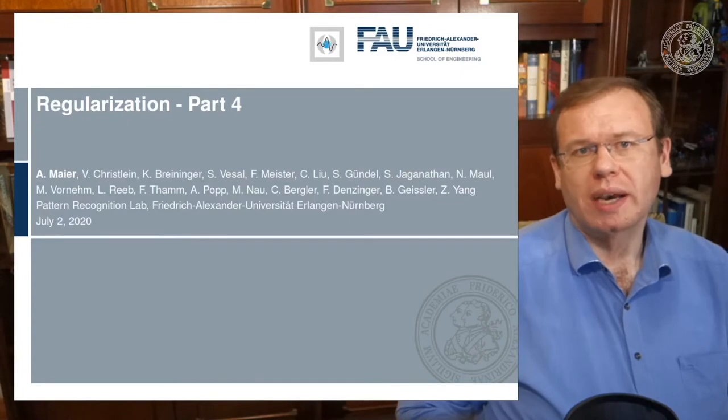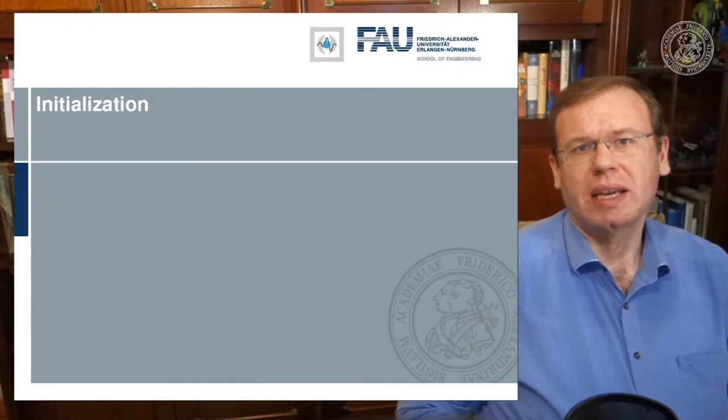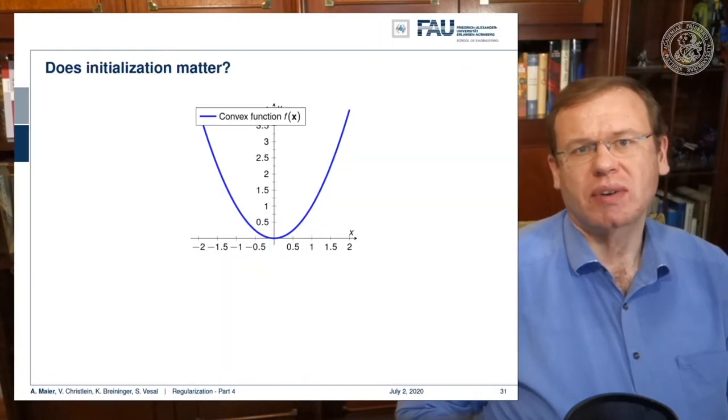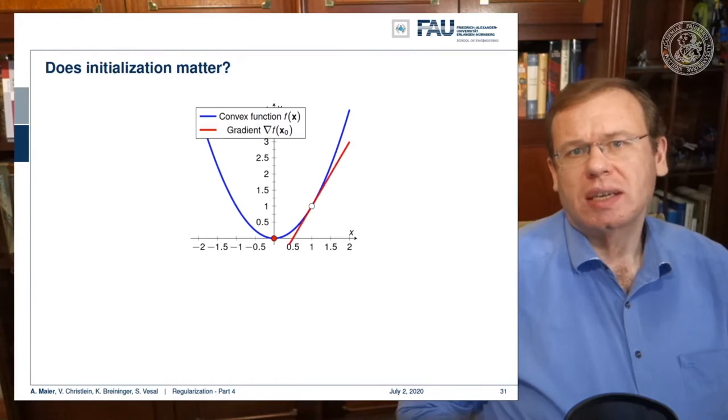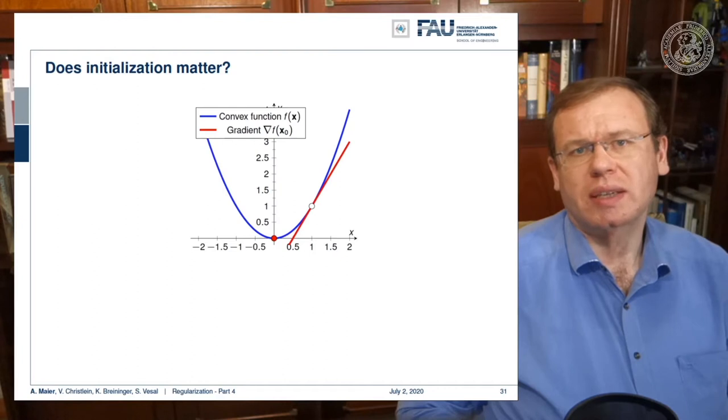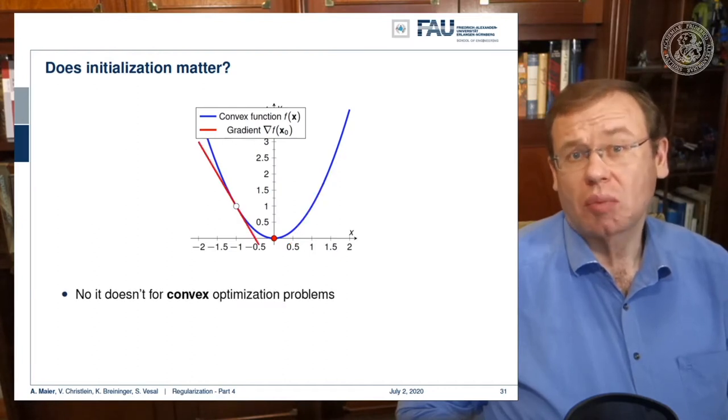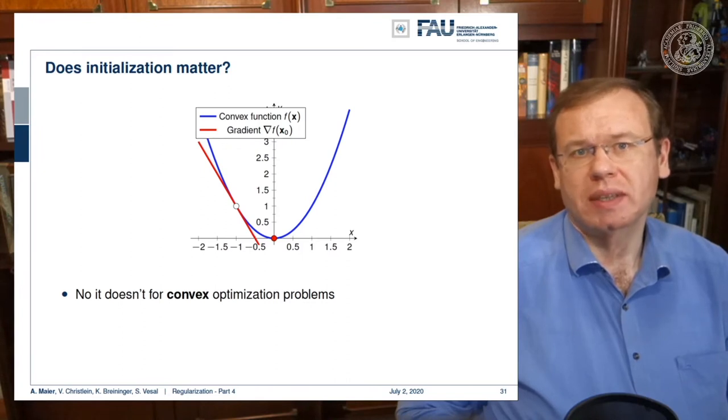Jens tells us that the stuff that works best is really simple. So you may wonder, why does initialization matter? If you have convex functions, it actually doesn't matter at all because you follow the negative gradient direction and you always find the global minimum. So no problems for convex optimization.